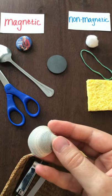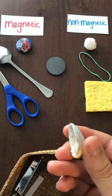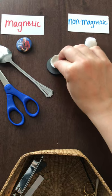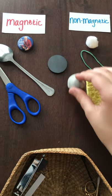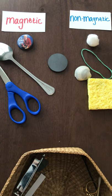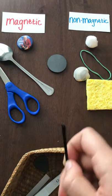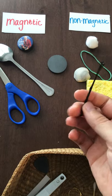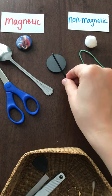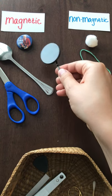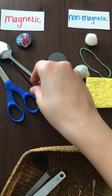I have a seashell. Do you think it's magnetic or non-magnetic? Hmm. It's non-magnetic. I have a bobby pin. Do you think it's magnetic or non-magnetic? Let's see. It's magnetic! It's sticking to the magnet. It's attracted to the magnet.